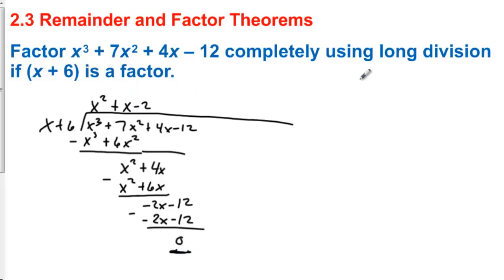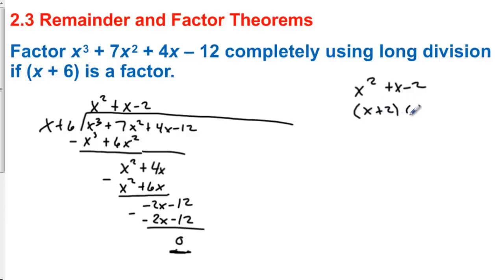Then we take what's left — we have x squared plus x minus 2 — and we factor what remains. So we have x plus 2 and x minus 1. It says factor completely using long division; we've done that. And then if we bring over the x plus 6, this polynomial is completely factored.